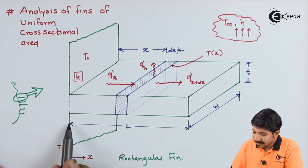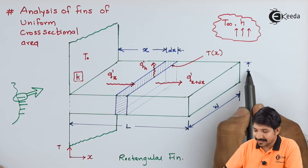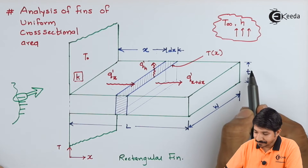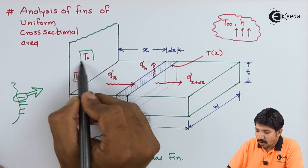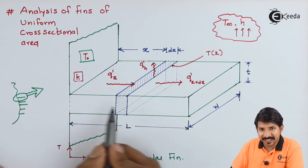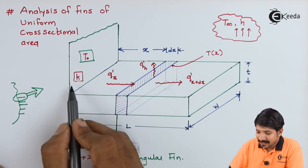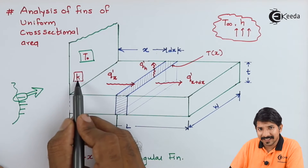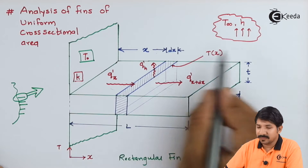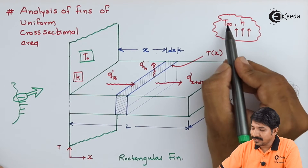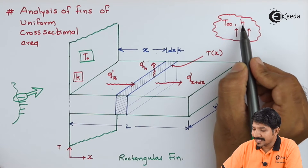Let us consider the length of the fin is L. The width is W and thickness is T. Let us say that the temperature of the surface on which the fin is attached is T0, and the thermal conductivity of that surface is K. The air or the fluid blowing around the fin has temperature T infinity and heat transfer coefficient H.